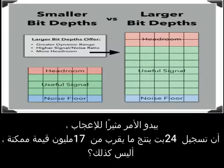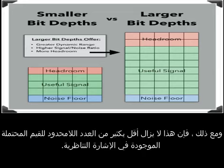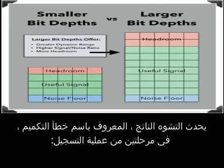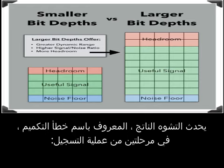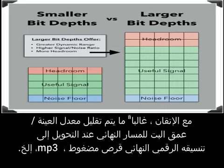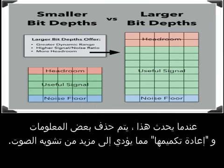Quantization error. It sounds impressive that a 24-bit recording yields almost 17 million possible values — yet that's still far less than the infinite number of possible values that exist in an analog signal. So with almost every sample, the actual value lies somewhere between two possible values. The converter's solution is to simply round it off, or quantize it, to the nearest value. The resulting distortion, known as quantization error, happens at two phases of the recording process: one, in the beginning during AD conversion, and two, at the end during mastering. With mastering, the sample rate and bit depth of the final track is often reduced upon conversion to its final digital format — CD, MP3, and so on — and some information gets deleted and re-quantized, resulting in further distortion of the sound.